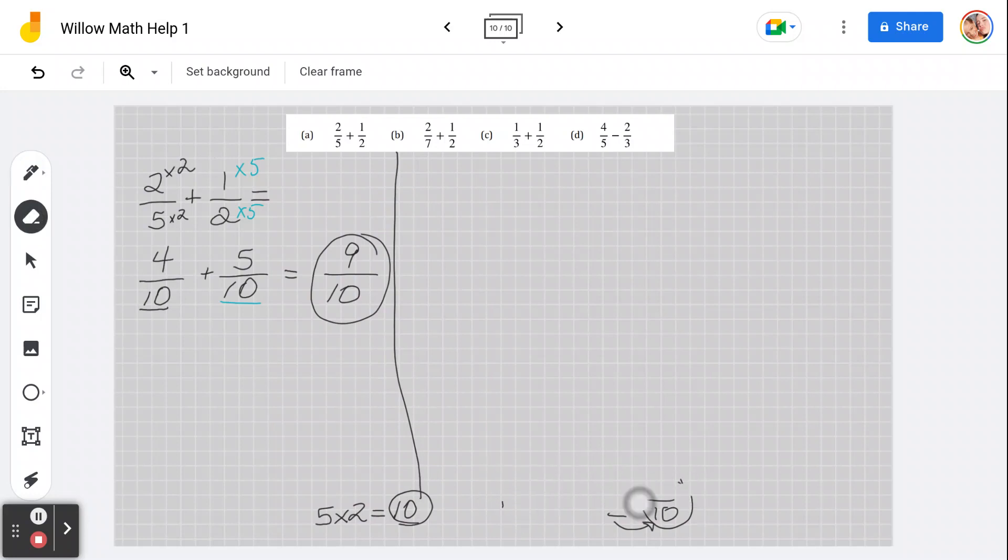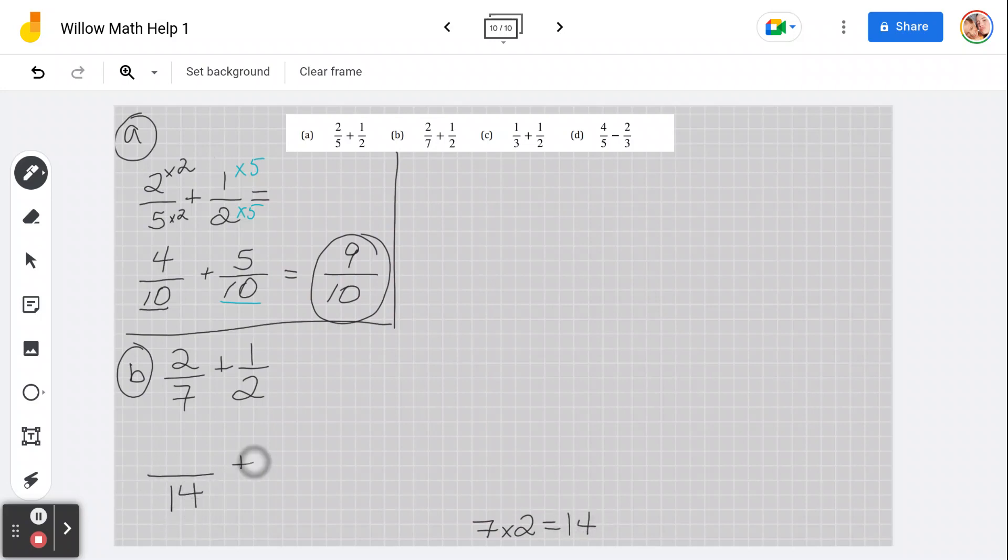Okay, let's erase this so we have some more space. Question B. Let's have a look here. You might need this space. Question B. This was A. We have 2 over 7 plus 1 half. Remember to get a common denominator. We can always multiply our bottoms. It's just easy peasy lemon squeezy.